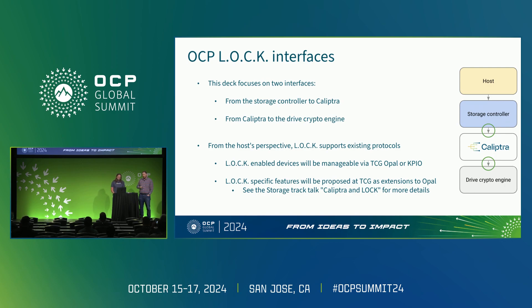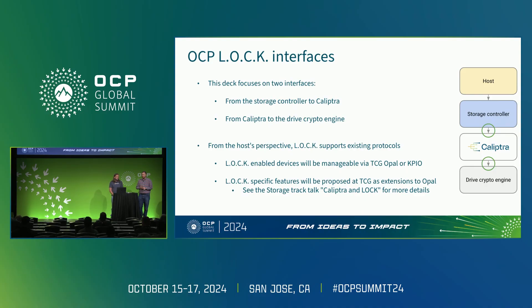There are a few interfaces that OCP Lock defines; this deck focuses on two of them. There is a storage controller inside the drive which will be configured to integrate and speak with Calyptra with the Lock feature set. There's an interface between those two components, as well as between Calyptra and the drive crypto engine — that crypto engine actually handles the media keys and does line-rate encryption and decryption of data as it flows in and out of the drive.